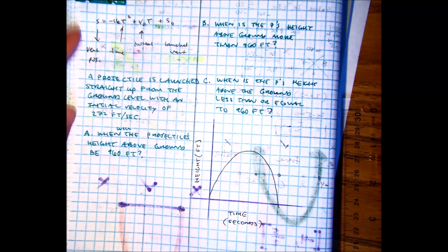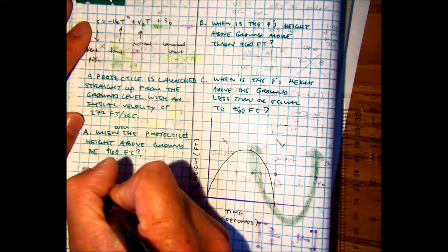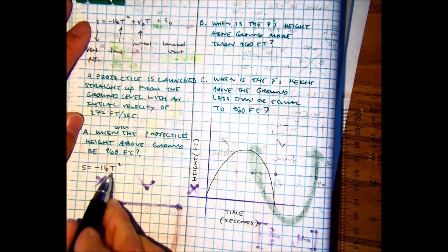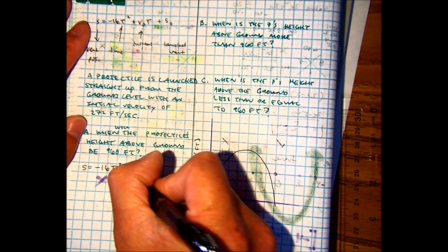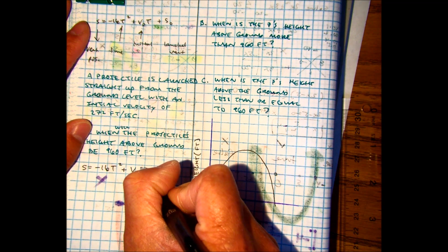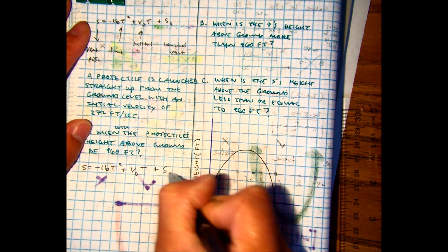So we just wrote down a formula. You can write that right below this problem. S equals negative 16T squared. My T's I like to put capital T's so it doesn't get confused with my pluses. V zero T plus S zero.